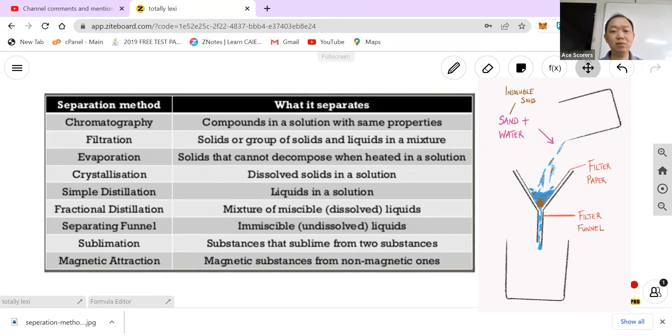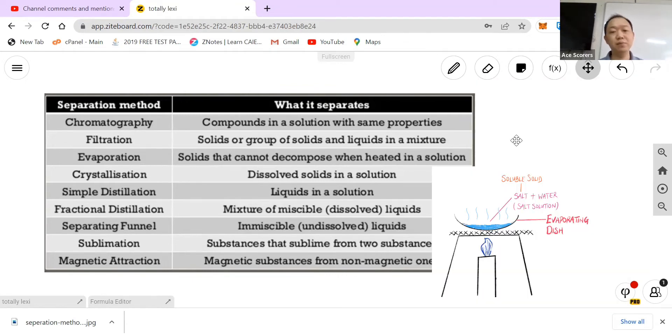Basically, in filtration, you have something that is insoluble and then something that is soluble. Next, evaporation: solids that cannot decompose when heated in a solution. So you would use evaporation where the water will be gone and you're left with the residue. Next, crystallization: dissolved solids in a solution.